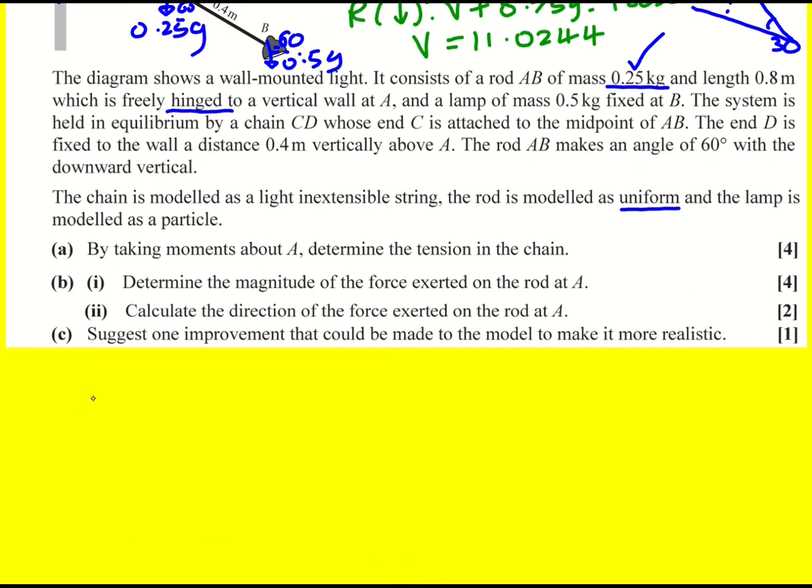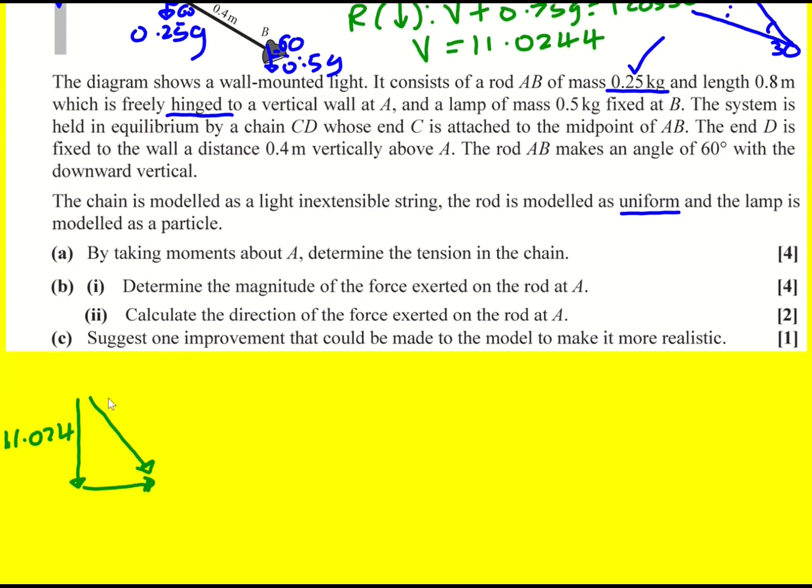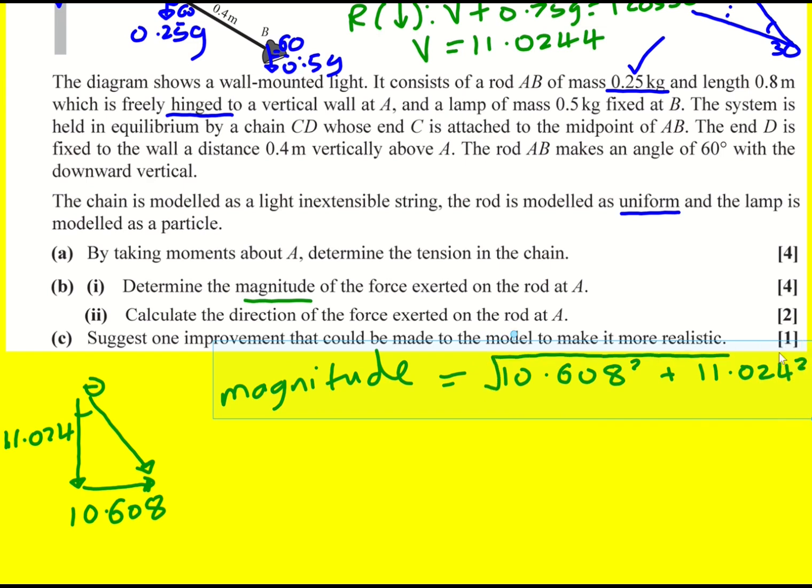So I can draw a little force triangle. Okay, I've got my vertical component, and I've got my horizontal component. So overall, there's going to be this for my force at the hinge. 10.608. And then this can be my angle. So if I want the magnitude, then it's going to be 10.608 squared plus 11.024 squared, all square rooted, which ends up being 15.299 or 15.3 newtons. Well done if you got that.